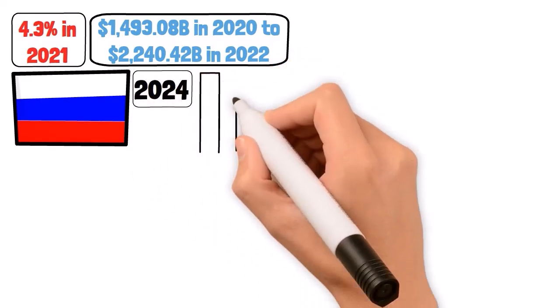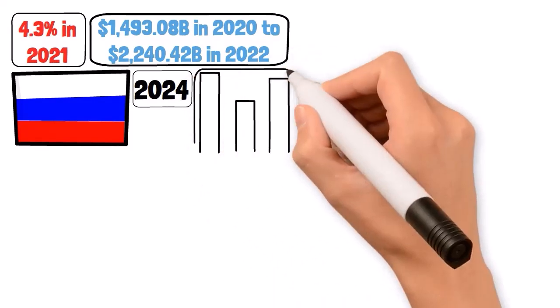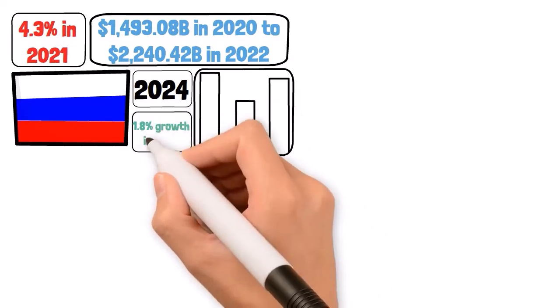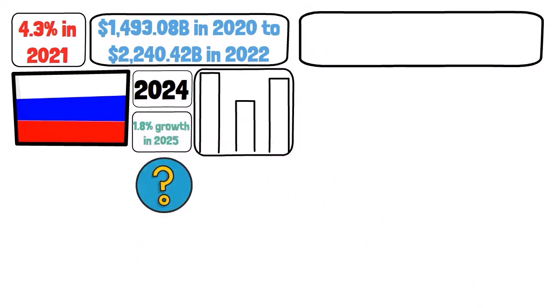Amidst sanctions and geopolitical chaos, Russia's GDP has been a rollercoaster of rises and falls. With a predicted shrinkage to 1.8% growth in 2025, what will the next five years hold? Welcome to Fun Financial Insights, where we turn the complex world of economics into an adventure.